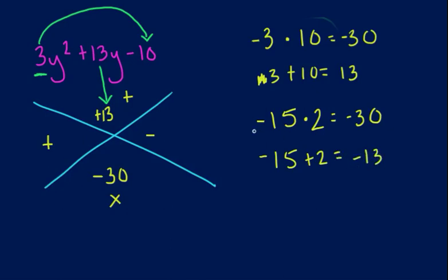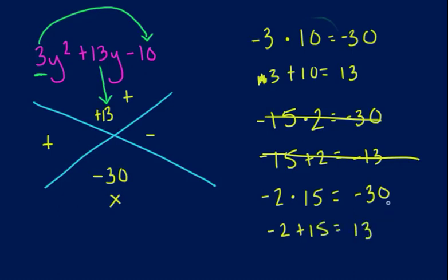But I don't actually have the exact number. I have to have this be a positive. So what if I switch this around? What if I did negative 2 times 15? That gives me negative 30, and negative 2 plus 15 gives me a positive 13. So those are the numbers I'm looking for because negative 2 times 15 gives me negative 30, and negative 2 plus 15 gives me positive 13.